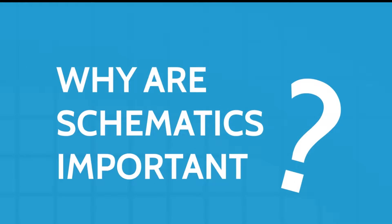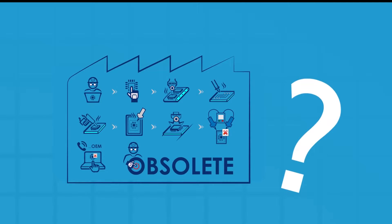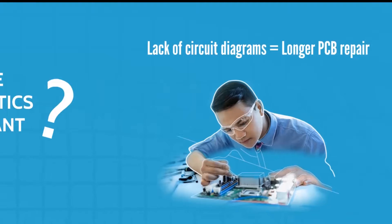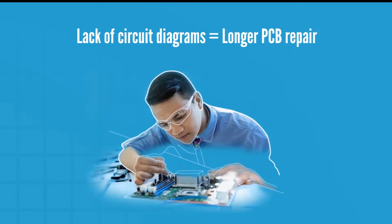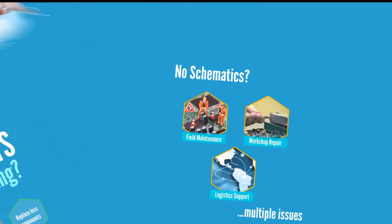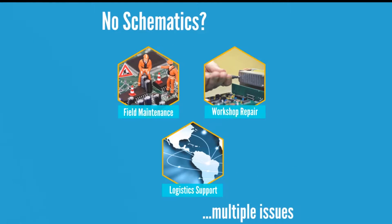Why are schematics important? Electronic circuits aimed at industrial use are designed to last many years. Unfortunately, however, many are quickly made obsolete by the original equipment manufacturer. Lack of schematics makes matters worse, as the technical staff in the field as well as independent service centers are left wondering how to fix an unknown circuit without having the necessary documentation — it would be equivalent to having to reach a location without a map or GPS to help.